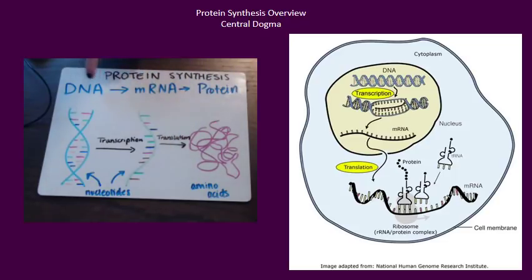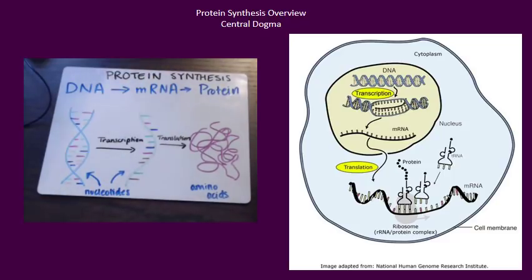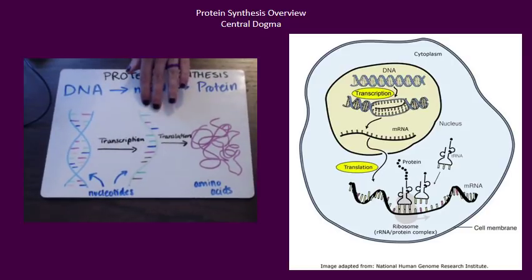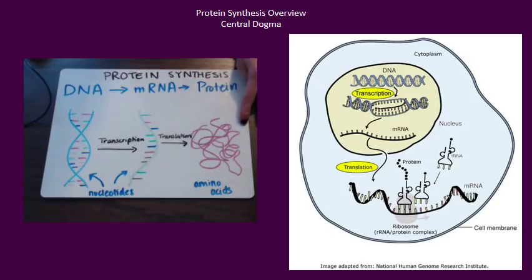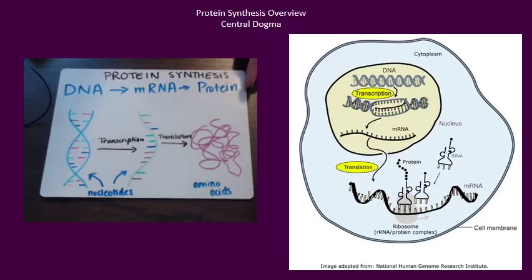The building blocks of both DNA and messenger RNA are nucleotides, with one exception: DNA has thymine where messenger RNA has uracil. And then after the ribosome takes a look at that messenger RNA, we're going to use what we find on the messenger RNA to string together amino acids, which are the building blocks of protein.